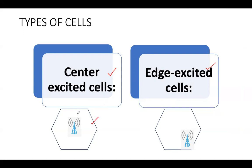If the base station is located at the center of the cell, then such a cell is called a center excited cell. In such case, the base station should have an omnidirectional antenna.